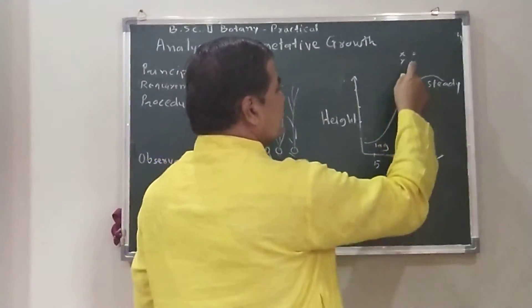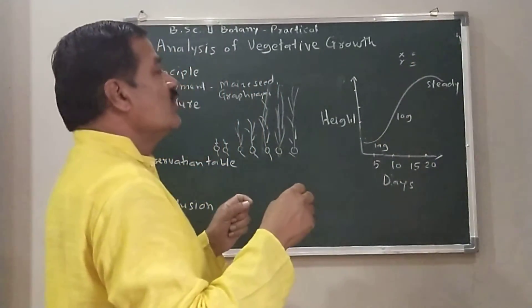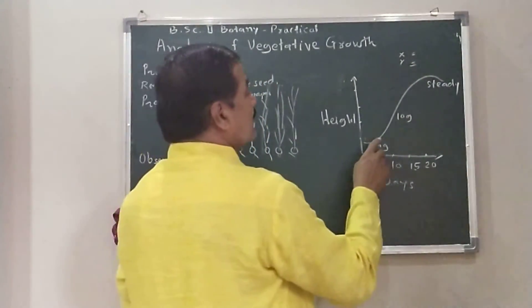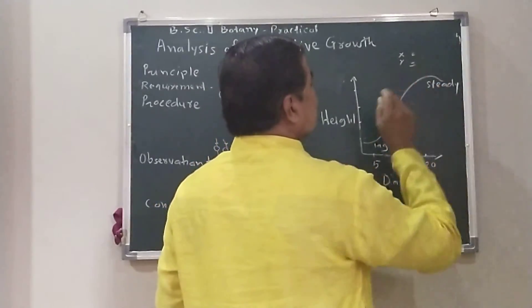Then, cell elongation. In the cell elongation, cell size goes on increasing. Therefore, faster growth takes place.